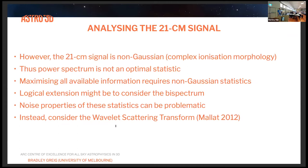However, the brightness temperature is a non-Gaussian signal — it has a complex ionization morphology that can't be simply characterized by a Gaussian statistic such as the power spectrum. So the power spectrum is not an optimal statistic for measuring this brightness temperature signal. With these expensive experiments, we want to maximize all available information, so we need to look at non-Gaussian statistics for fully maximizing the products of these experiments.